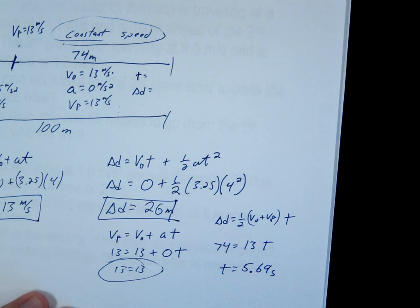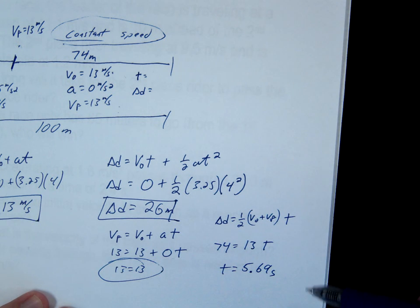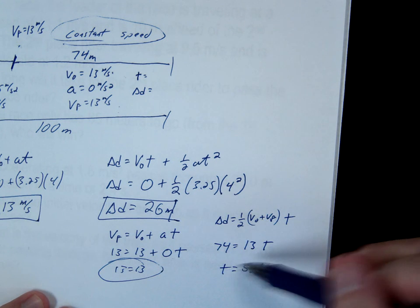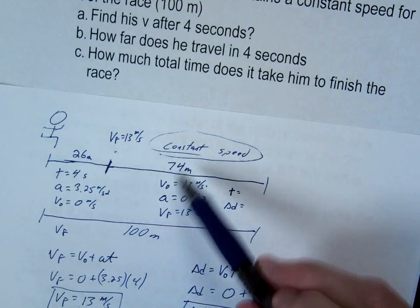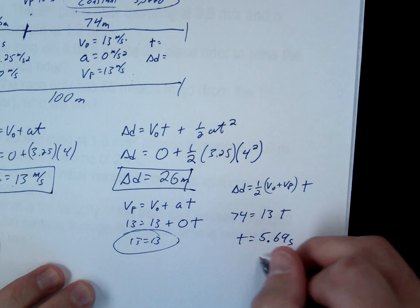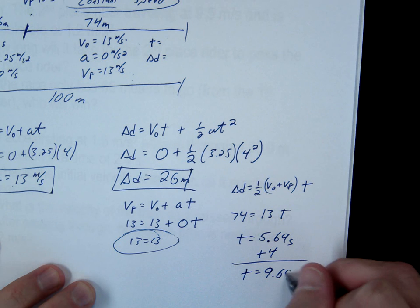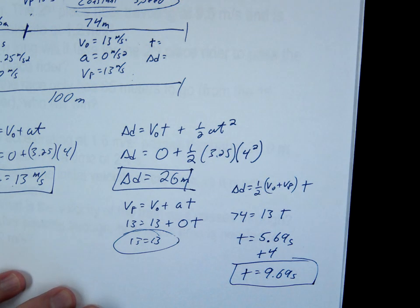Is that the answer? No. If anyone knows anything about a 100-meter dash, that's ridiculous. You would never run that fast. What do we do wrong? You need to add the four seconds. This was just the time for the ending part. You have to add in the time for the beginning part, which gives us a more realistic, though still freakishly small number. 9.69 seconds is the total.